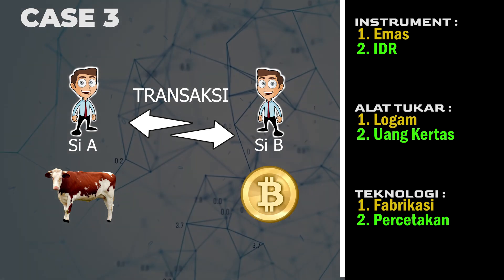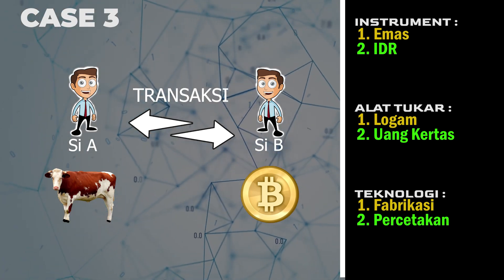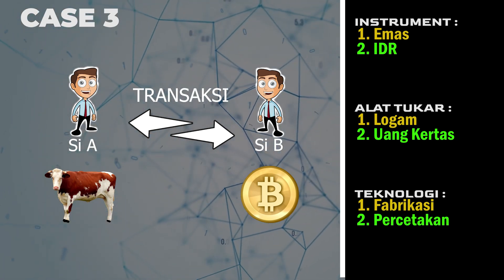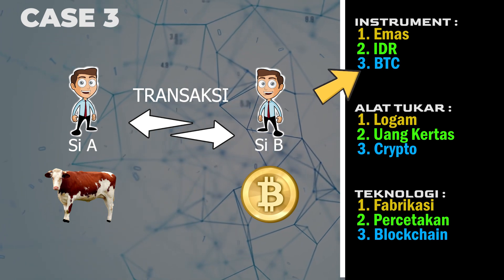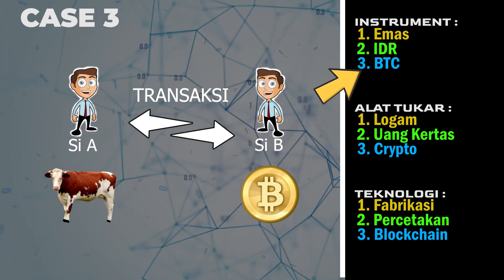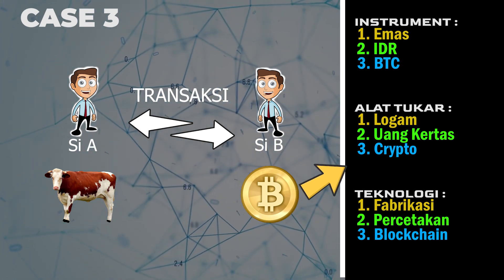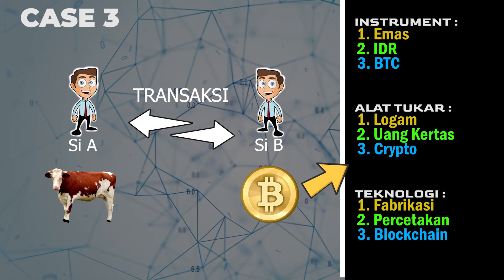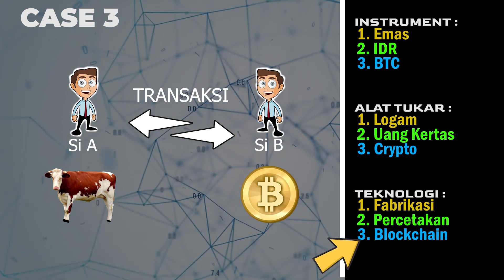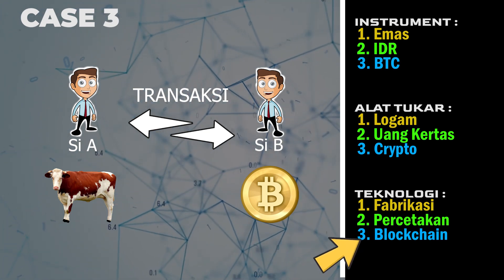Lalu kasus yang terakhir, si B memiliki bitcoin untuk ditukarkan. Kita perhatikan bahwa instrumennya adalah bitcoin, alat tukarnya adalah crypto, dan teknologi yang digunakan adalah blockchain.